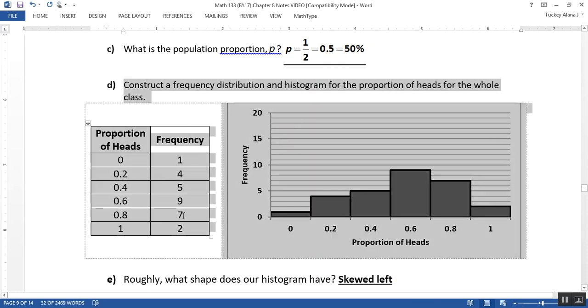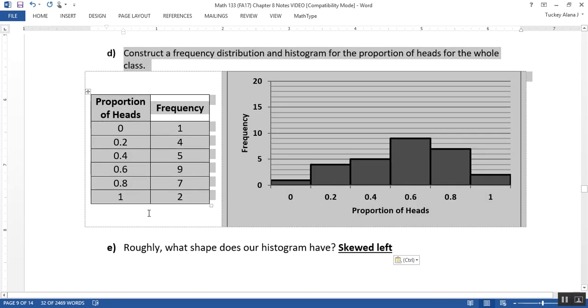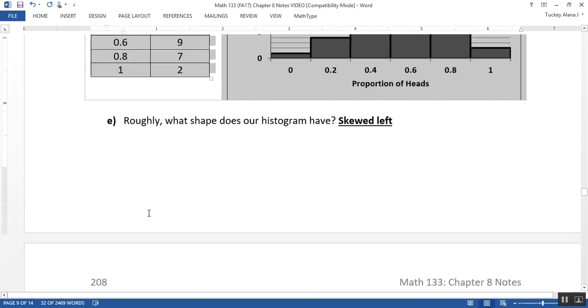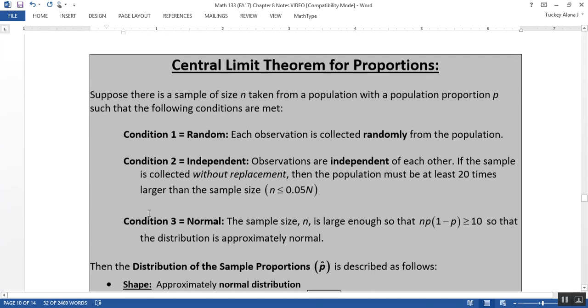We'll be able to see the shape, center, and spread for that distribution. We want to take that further and codify what that distribution will look like in the central limit theorem for proportions.